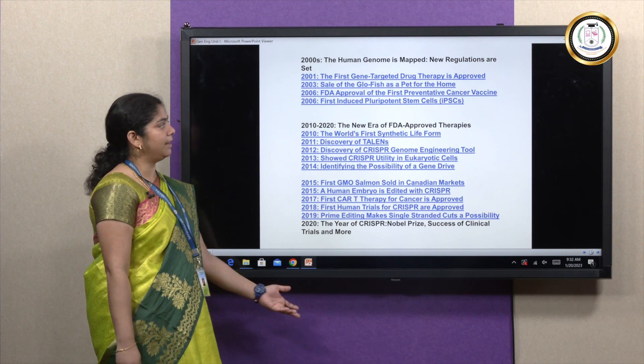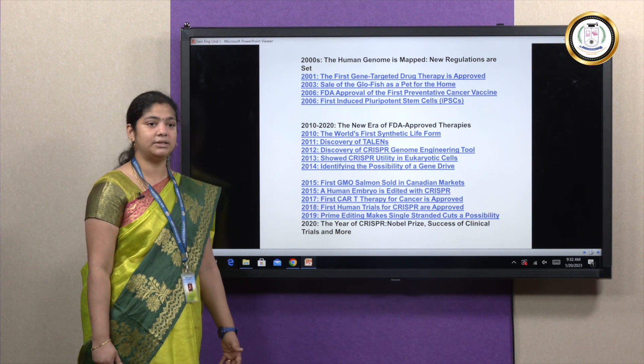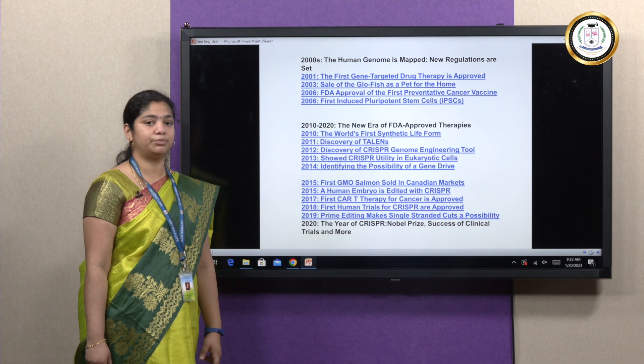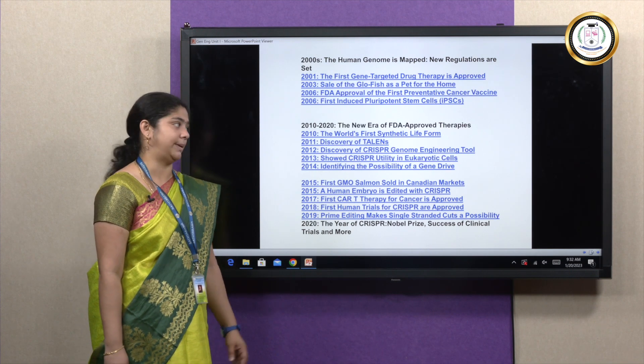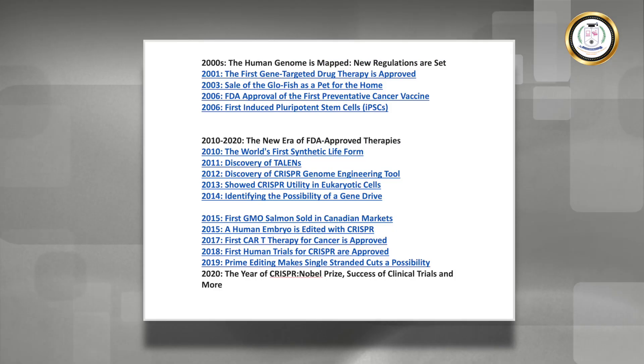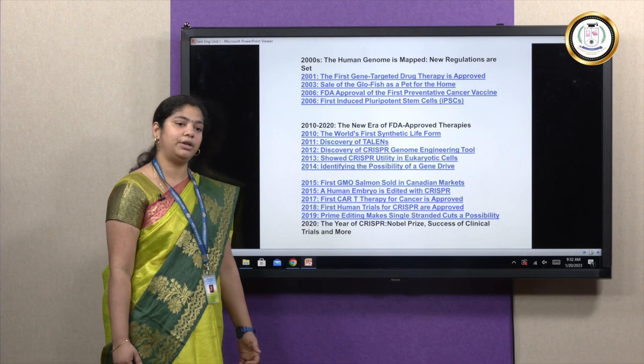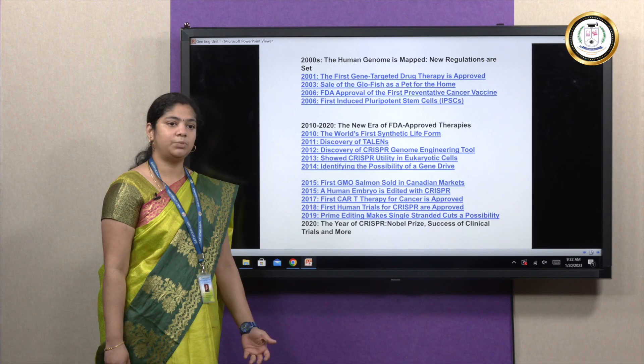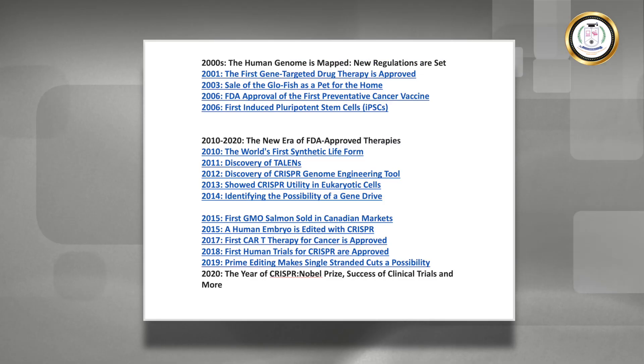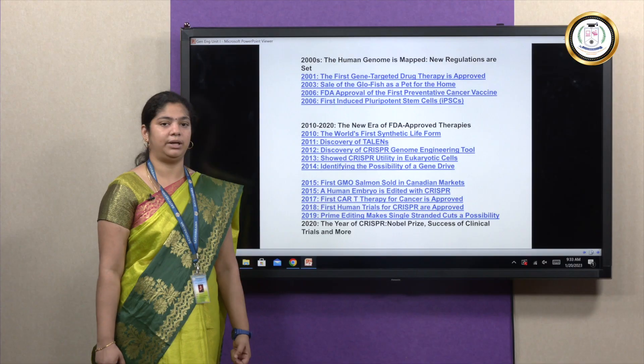The human genome project helped us to map the entire gene sequence, which in turn will be very useful for us to identify gene therapies. By 2010s we can see a new era of FDA approved therapies where we have the use of CRISPR-Cas9. The CRISPR-Cas9 for which we recently obtained Nobel Prize by a scientist is now doing a breakthrough.